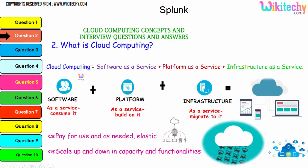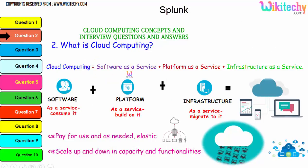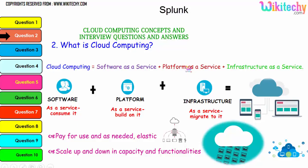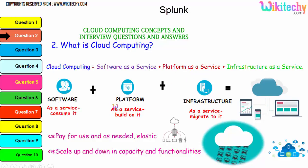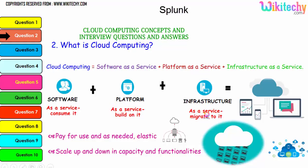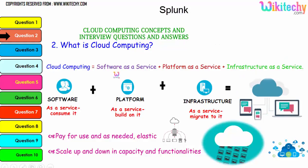Cloud computing consists of Software as a Service (SaaS), where software is consumed as a service; Platform as a Service (PaaS), where the platform is considered as a service; and Infrastructure as a Service (IaaS), where infrastructure is considered as a service. The collaboration of software, platform, and infrastructure is referred to as cloud computing.